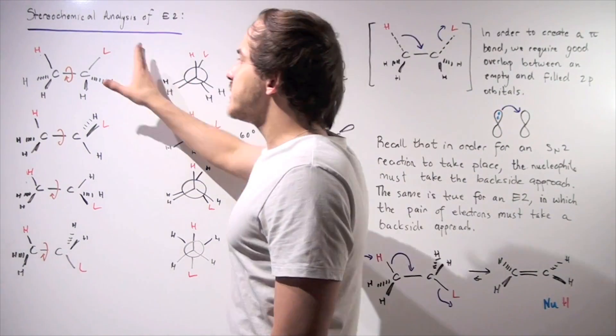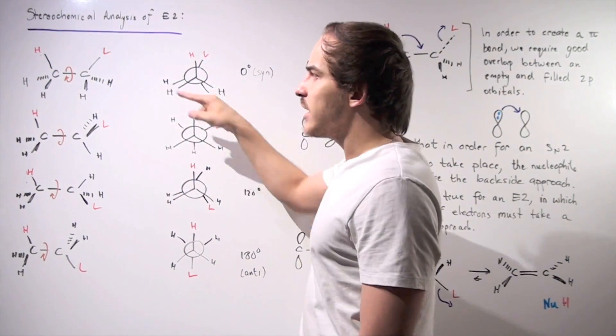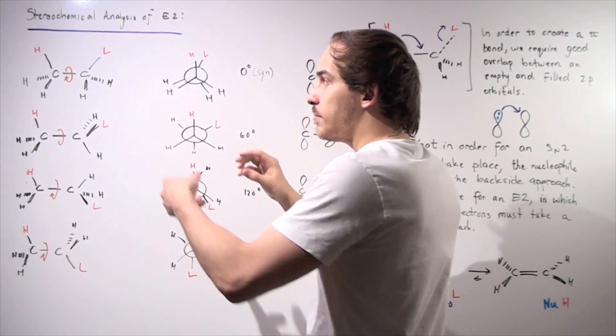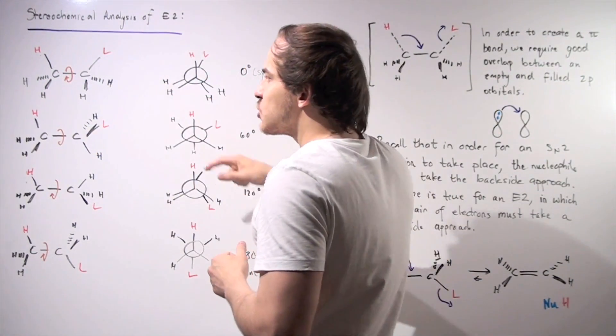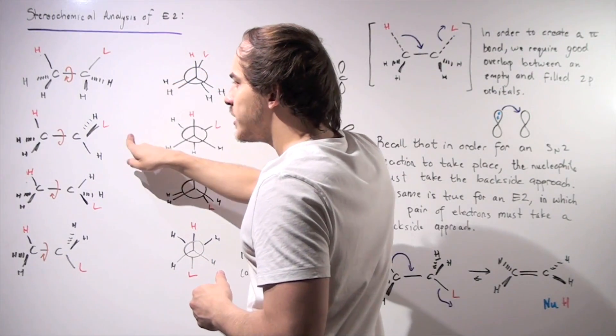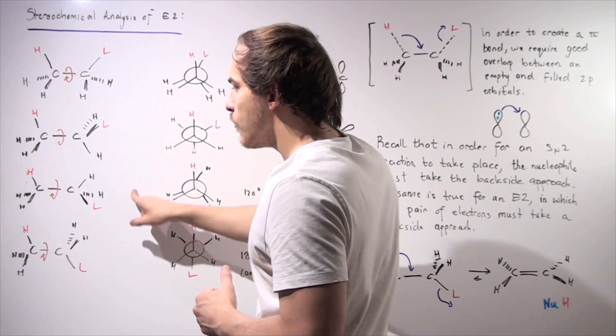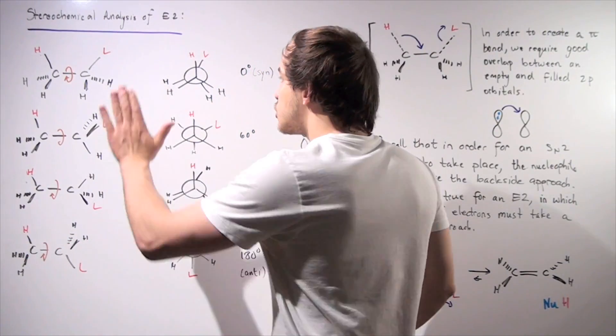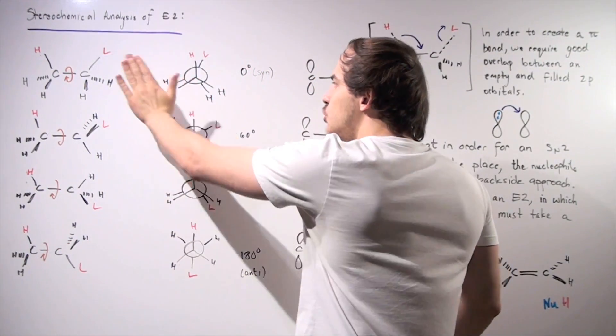So let's begin with the following substrate. Let's suppose we have the following alkane, which means the two carbon-carbon atoms, the bond, can rotate in space. So if it rotates 60 degrees, we get this molecule, 60 more we get this, and 60 more we get this. So these are the corresponding Newman projections.